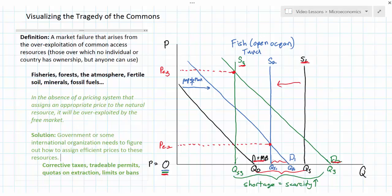So even something like fish—it's not to say that fish cannot be extracted from the ocean at all if we want to have healthy fish stocks. There is some level of extraction that is socially optimal. In our graph here, QS3 and QS1 and QS all represent efficient levels of extraction of tuna from the ocean.